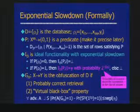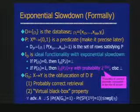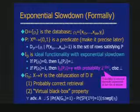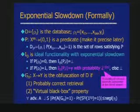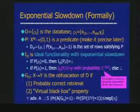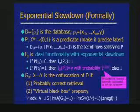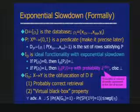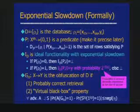There is a database — now with multiple columns, not just one. There is some predicate, and here is a set of rows satisfying this predicate. I'm giving you a different ideal functionality, with the relevant part highlighted. This is the ideal functionality with exponential slowdown: if you give it a predicate satisfied by nothing in the database, it returns nothing. But if the predicate is satisfied, it returns the right answer with probability inversely exponential in the size of the answer, or else it gives you nothing.